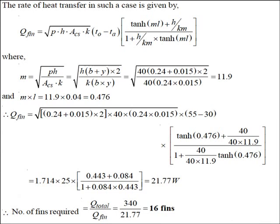Substituting all values of P, H, A, K, base temperature, and ambient temperature into the Q_fin equation gives Q_fin = 21.77 W per fin. Since the total heat dissipation required is 340 W, the number of fins required = 340 / 21.77 ≈ 16 fins. Therefore, 16 fins with the given dimensions and thermal conductivity are needed to keep the motor body temperature within 55°C.